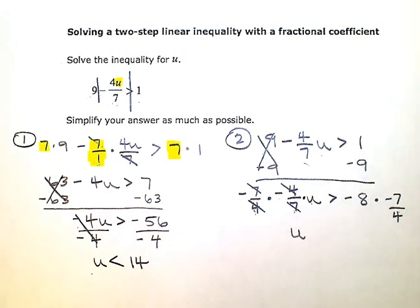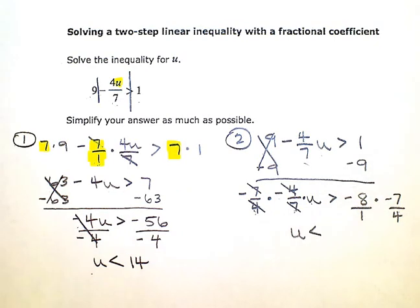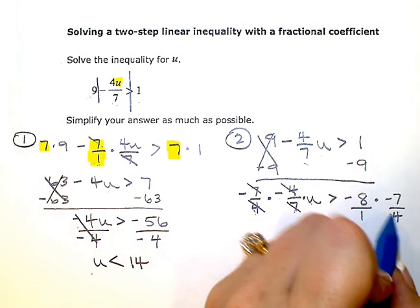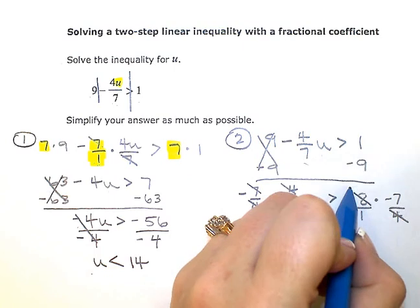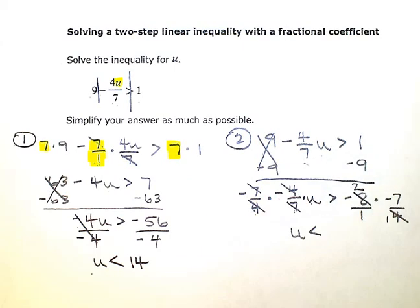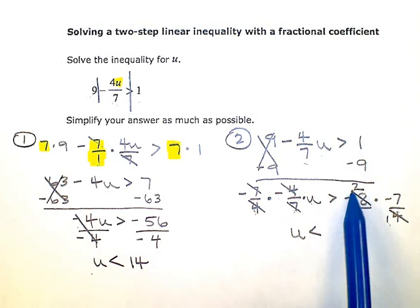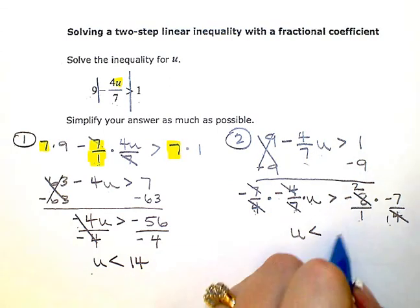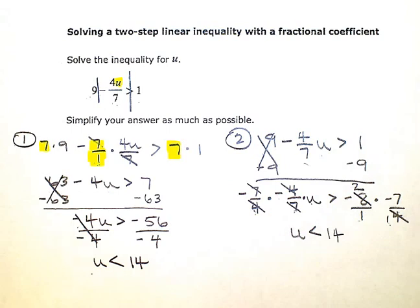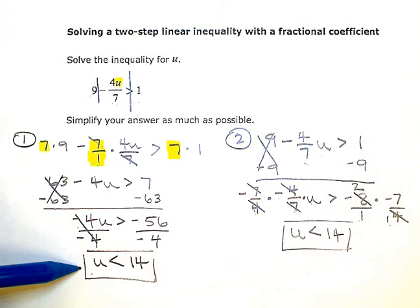Since I multiplied by a negative on both sides, I flip my sign. Now I simplify the right side: I put negative eight over one to keep numerators and denominators lined up. Four goes into eight two times and into itself once, so the denominator becomes one. In the numerator, negative two times negative seven is positive fourteen. So whichever method you prefer to use, you get u is less than fourteen as your solution.